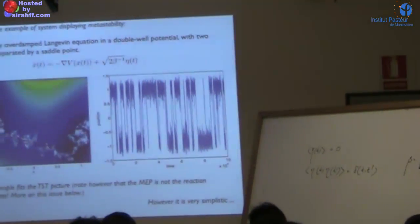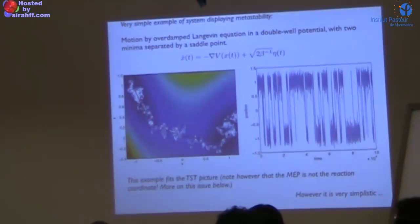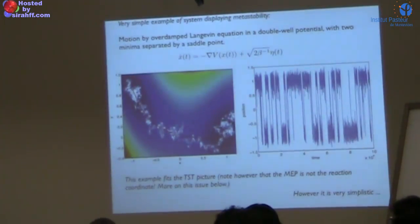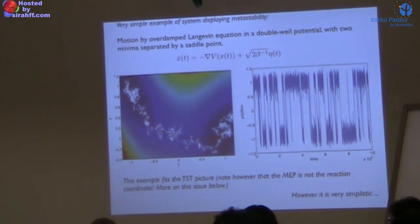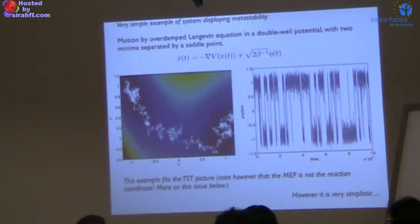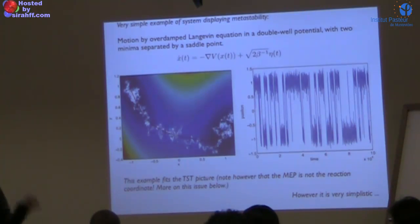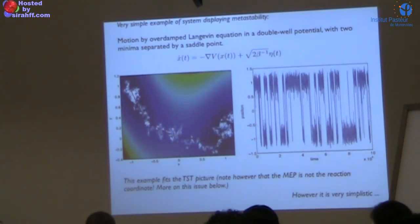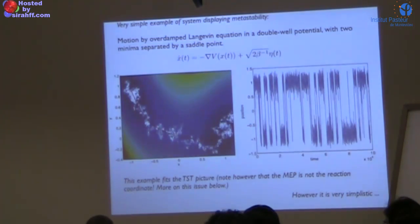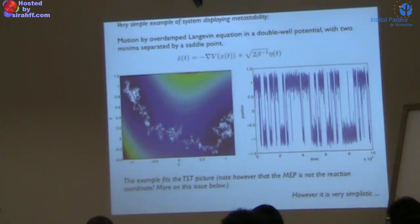Since I was not there for most of the school, I don't know what the other speakers covered or what your background is. Please ask me questions if I'm talking about things you already know, otherwise I'll assume what I'm saying is new. Here is a 2D example that illustrates what the metastable phenomenon looks like: a contour plot of a potential with one minimum here, one minimum there, and a saddle point in between.